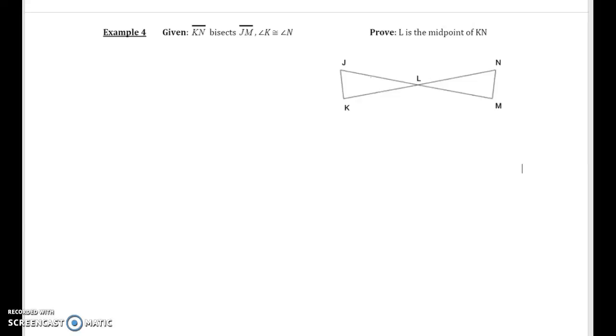Unit 4 lesson 5 example 4. This will be the flow proof example. Given KN bisects JM and angle K is congruent to angle M, prove that L is the midpoint of KN. In this proof they're not asking us to prove two triangles congruent to one another, so chances are this is going to be a CPCTC proof. Also, in order to show that L is the midpoint of KN, we need to show KL congruent to LN.